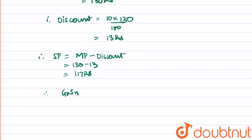Now we can calculate the gain as selling price minus the cost price, that is 117 minus 100, equal to 17 rupees.